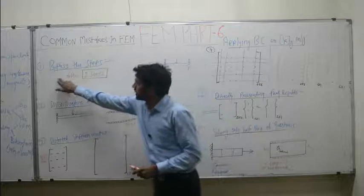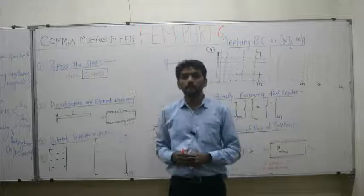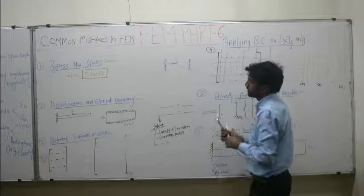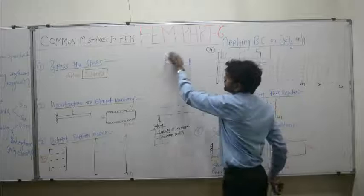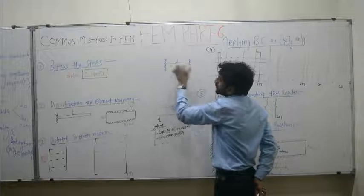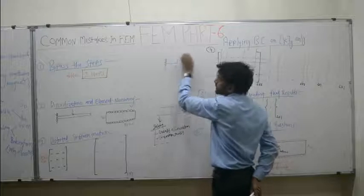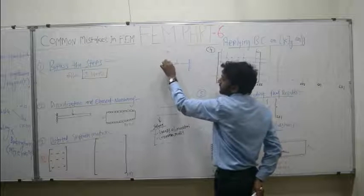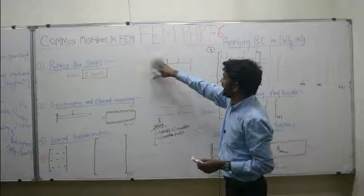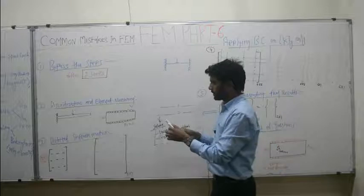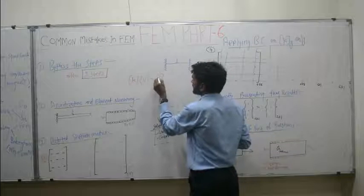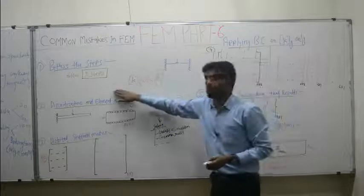Mistake number 1 is bypassing the step. While solving any problem — for example, a simple beam problem — you need to follow 9 steps. First, discretize the element. Then perform element numbering and node numbering. Then find the local stiffness matrix for each element. Then assemble those stiffness matrices. Then find the nodal displacement vector and the external force vector.